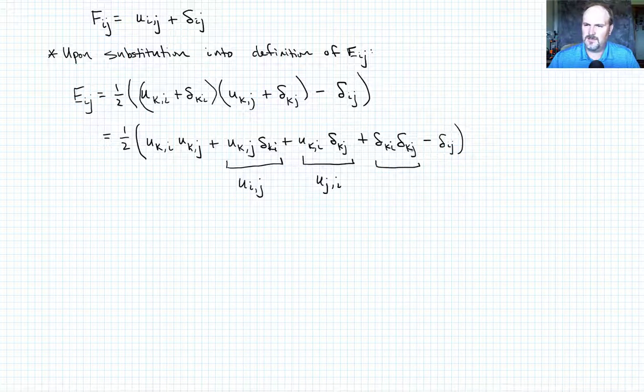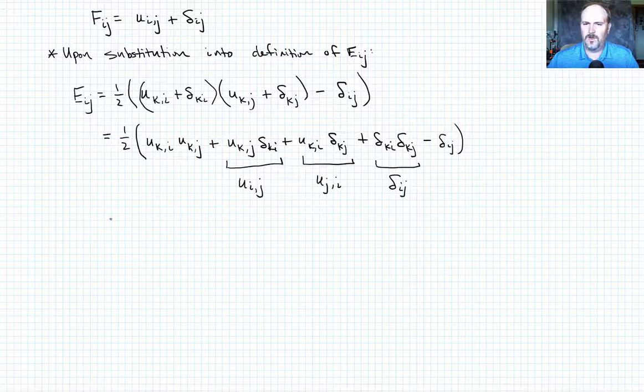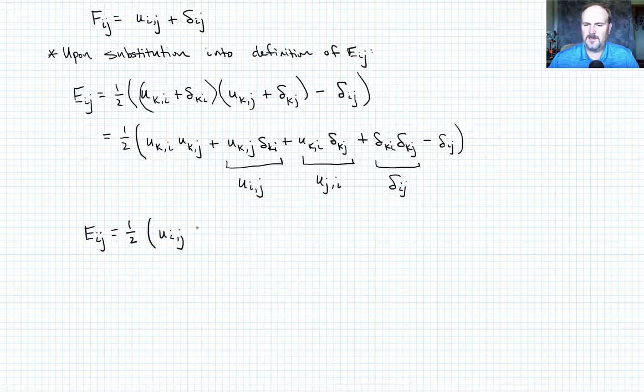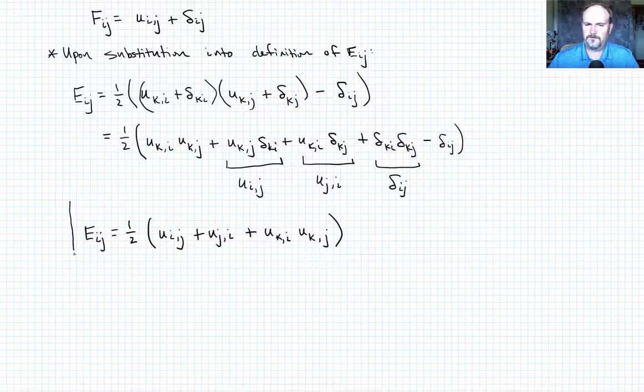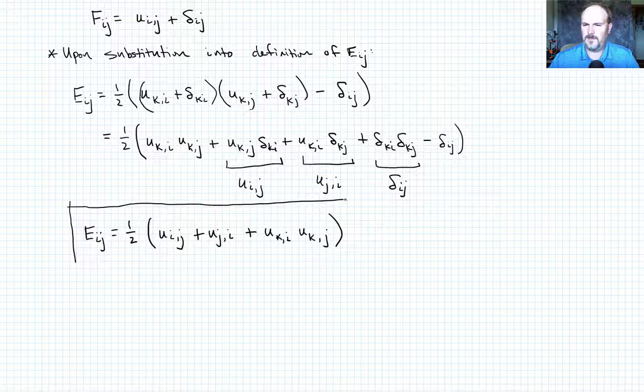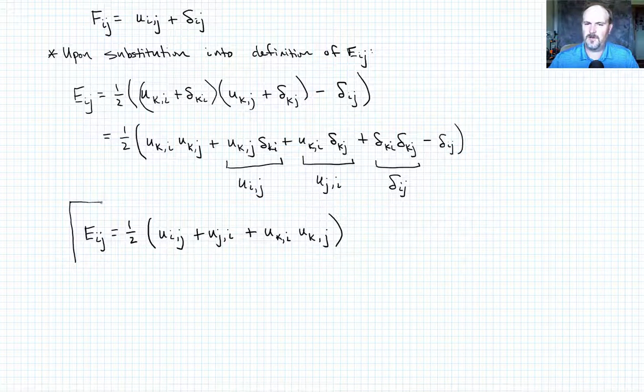And the same thing here. This looks like, we can swap either way, but we'll go ahead and take the k equals i, put it here, and write this as delta ij. So we have a delta ij there and a minus delta ij. Those cancel out, and we're left with the displacement formulation for the Lagrange strain tensor as one half times u_i comma j plus u_j comma i plus u_k comma i u_k comma j. So there's the displacement formulation for the Lagrange strain tensor.